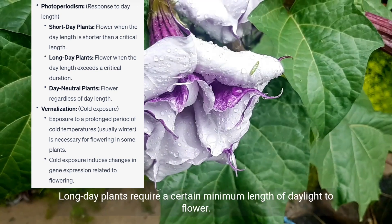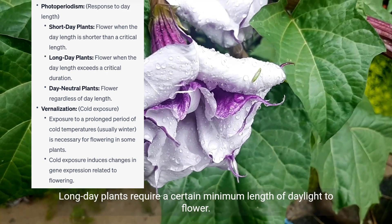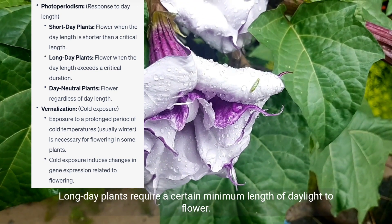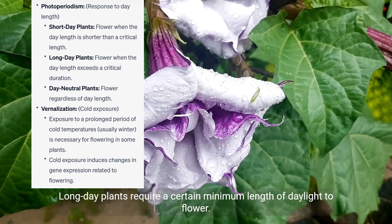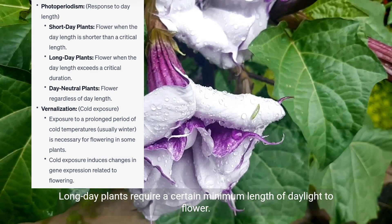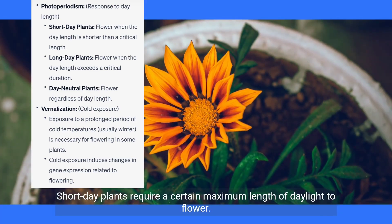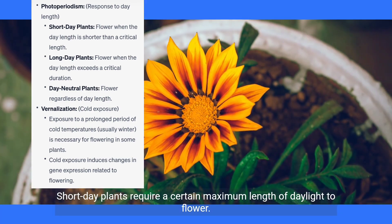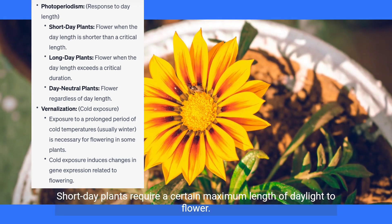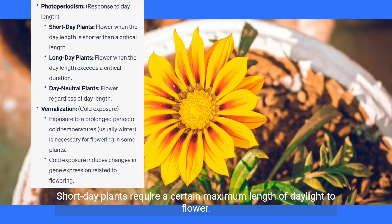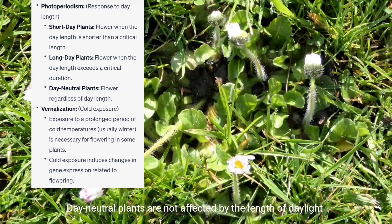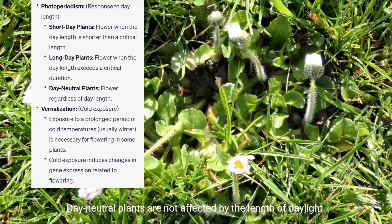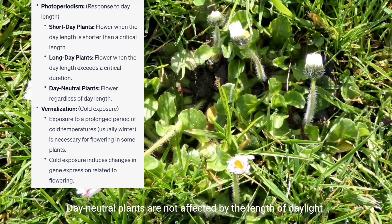Long day plants require a certain minimum length of daylight to flower. Short day plants require a certain maximum length of daylight to flower. Day-neutral plants are not affected by the length of daylight.